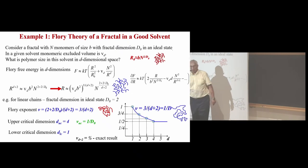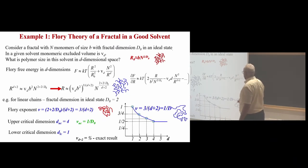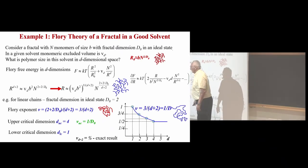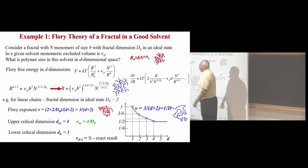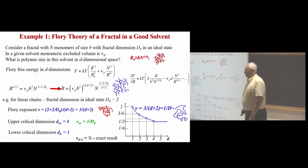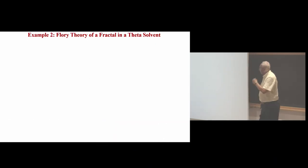When D₀ equals four — as in randomly branched polymers — the dependence is very different. If D₀ is large, the chain wants to be more compact. Above the upper critical dimension, chains become ideal. Below the lower limit, you can't make a polymer. Real chains are important in the region between — the real interactions matter in three dimensions between the two limits.